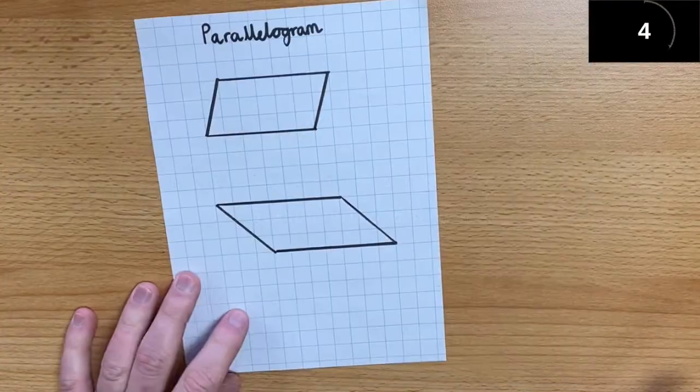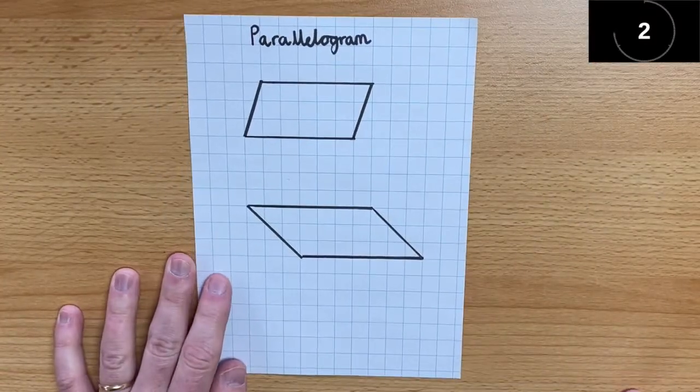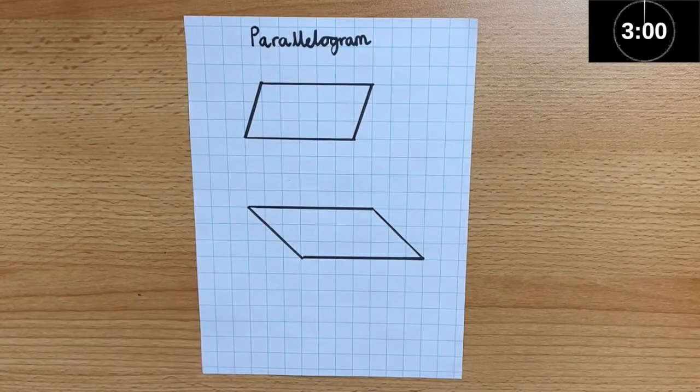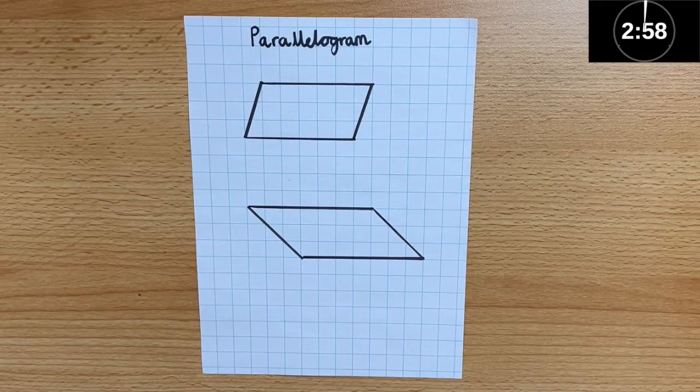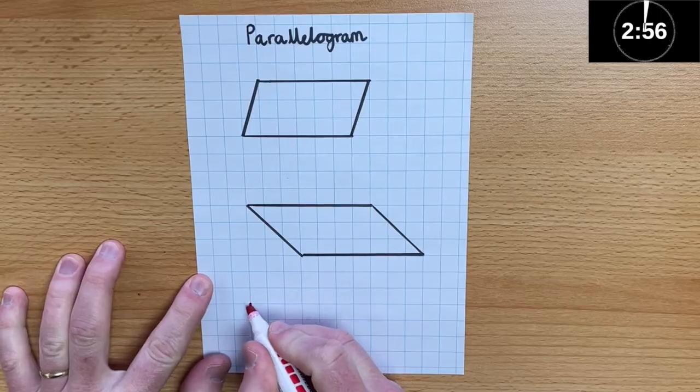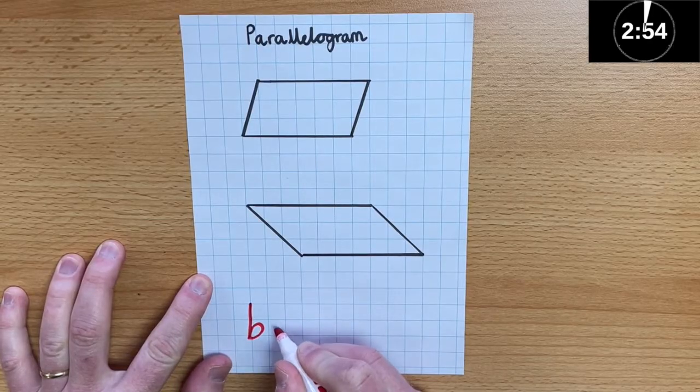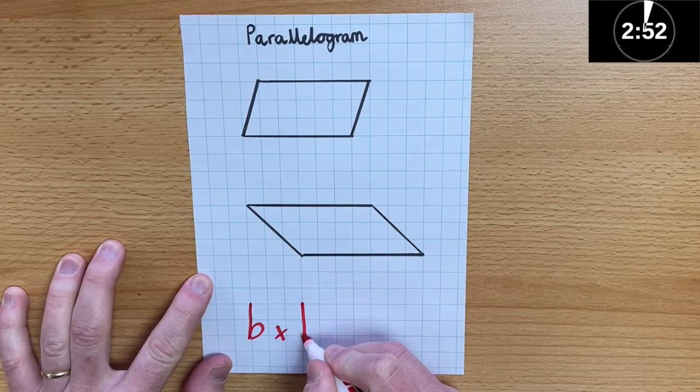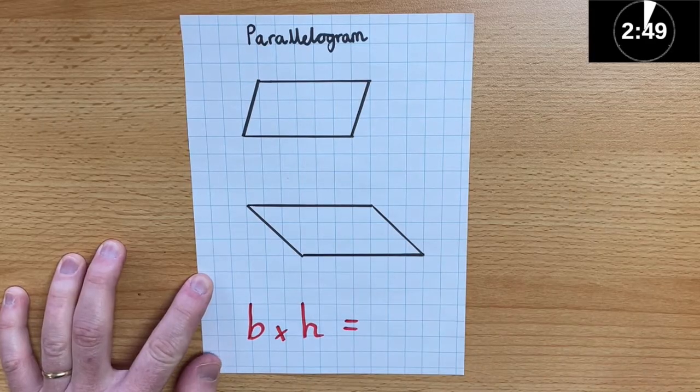So, let's start the timer, parallelograms first. To work out the parallelogram, we need to multiply the base by the height. It's really that simple.